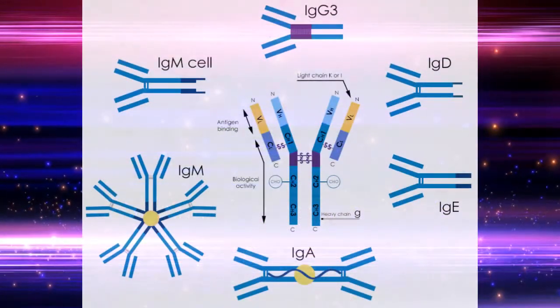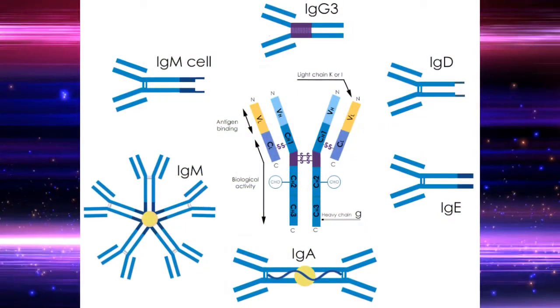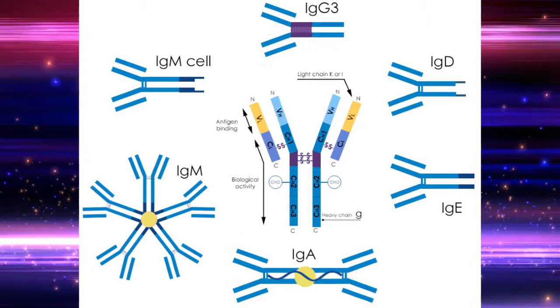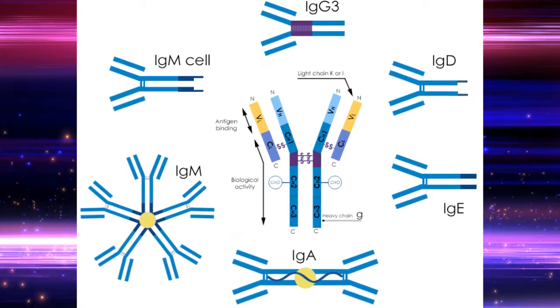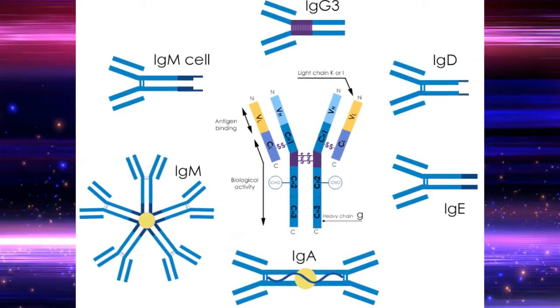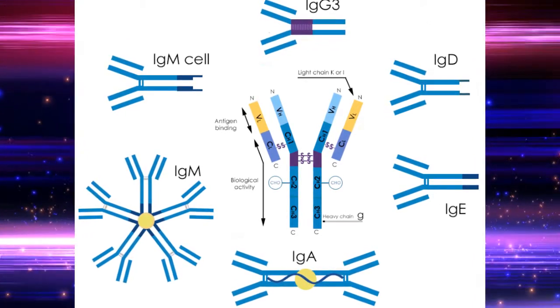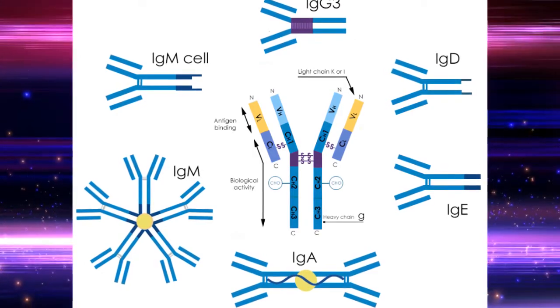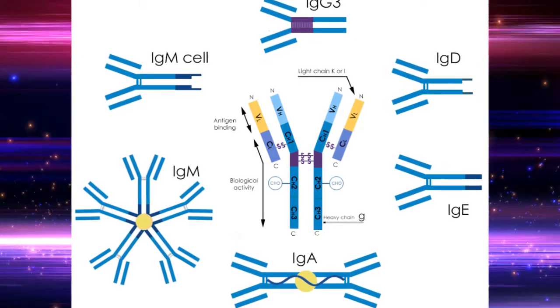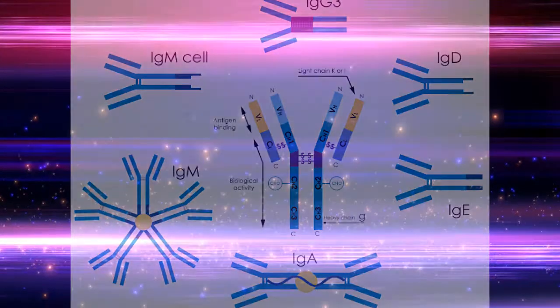Antibodies are divided into five major classes — IgM, IgG, IgA, IgD, and IgE — based on their constant region structure and immune function.